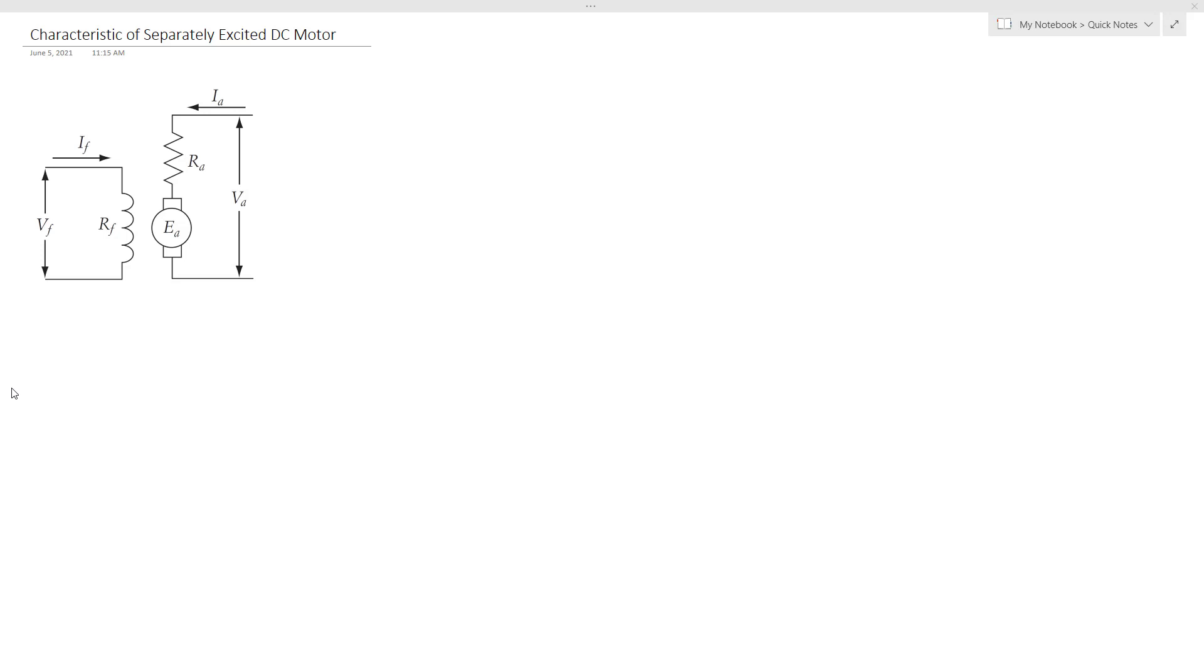So for separately excited DC motor, let's see the circuit diagram. From Ohm's law, the field current IF equals the field supply or voltage divided by the field resistance. So this is field current, this is the field voltage, and this is field resistance.